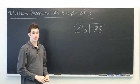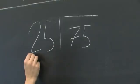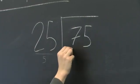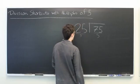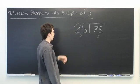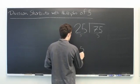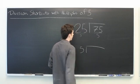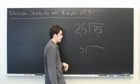Well, we can make this problem a little bit simpler if we divide both of these numbers by 5. 25 divided by 5 is 5. 75 divided by 5 is 15.